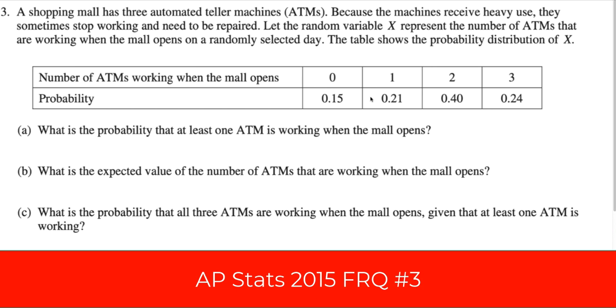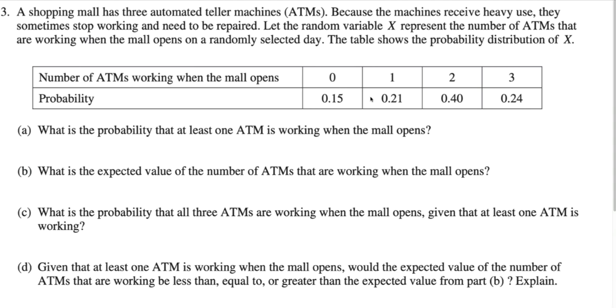All right, so 2015 number three — it's a probability question. We have expected values and random variables. Go ahead and pause the video and read it if you haven't already. We'll get started with part A.